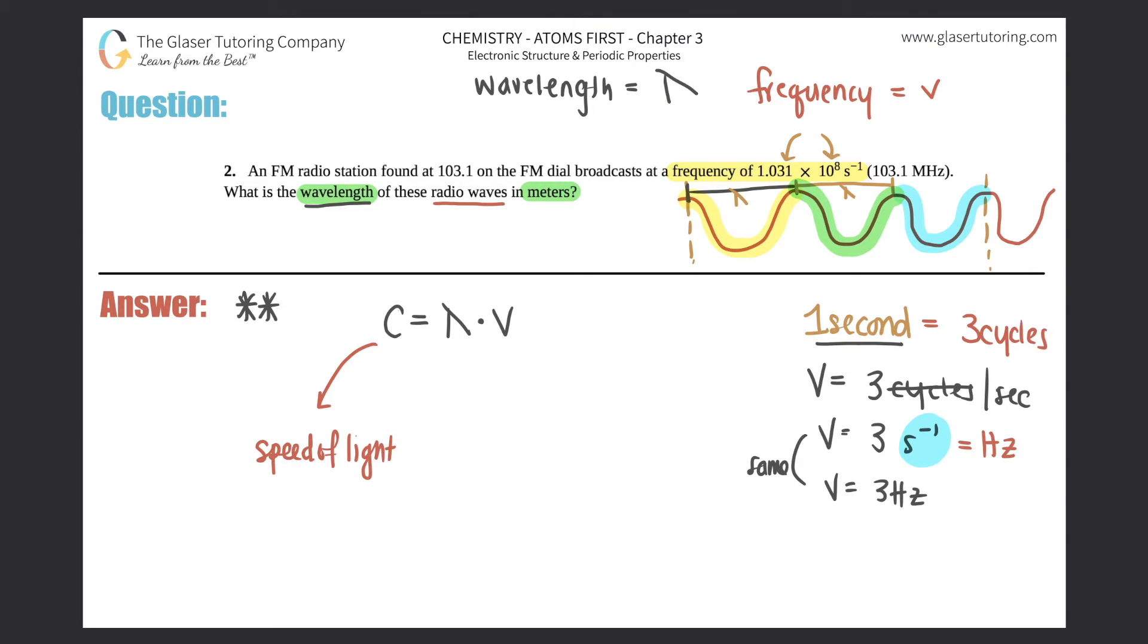C will always equal 2.998 times 10 to the eighth meters per second. So if you want to just jump to three times 10 to the eighth meters per second, be my guest. That's fine with me. I'm just going to put in 2.998 times 10 to the eighth meters per second.